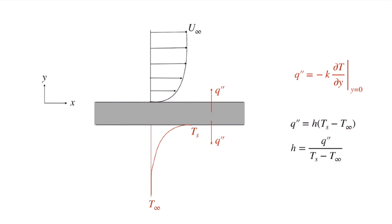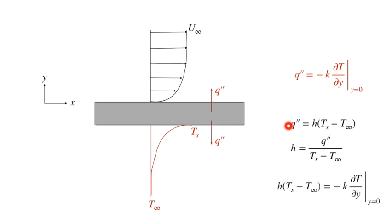Somebody can then use that convection coefficient without knowing the detailed temperature profile, and characterize the heat transfer with Newton's law of cooling from that surface. Now let's equate our two expressions.